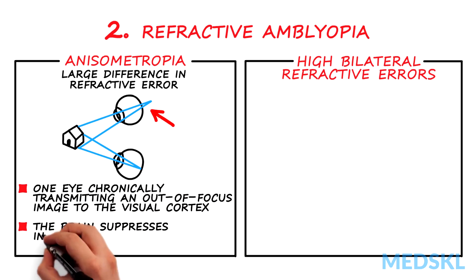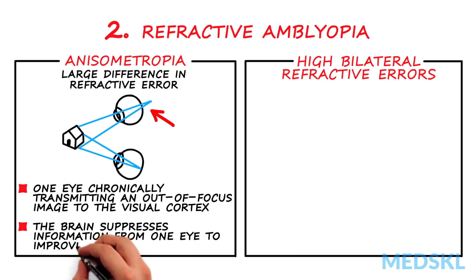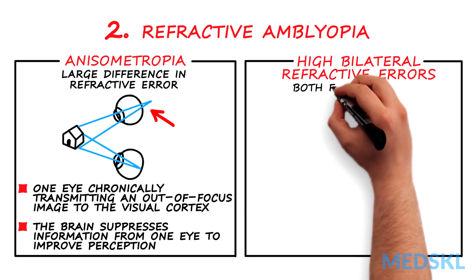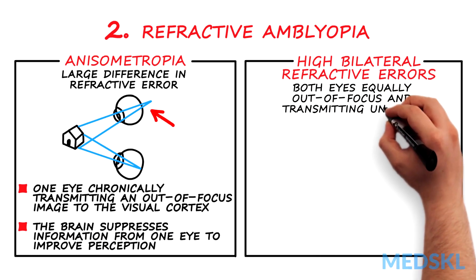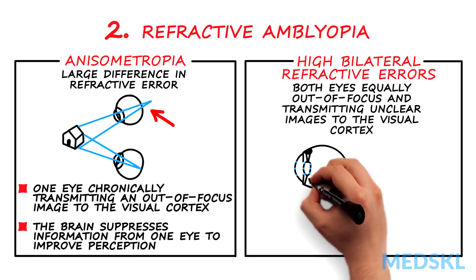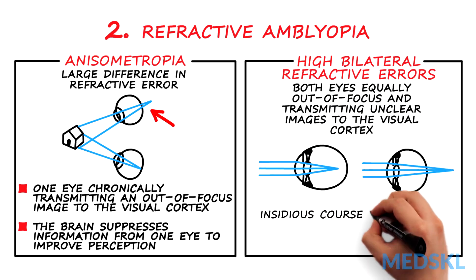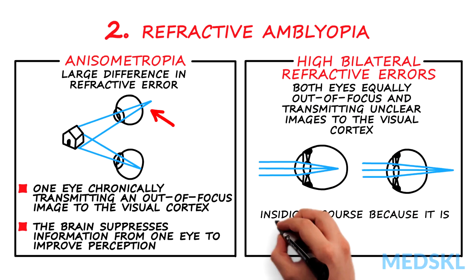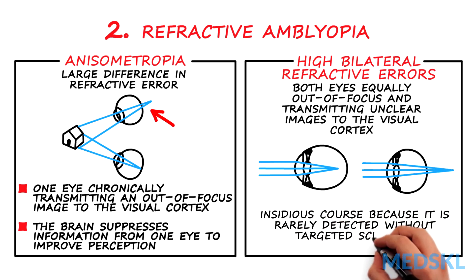The brain suppresses information from one eye to improve perception. With high bilateral refractive error, both eyes are equally out-of-focus and transmitting unclear images to the visual cortex. Unlike strabismic amblyopia, refractive amblyopia usually has an insidious course because it is rarely detected without targeted screening.